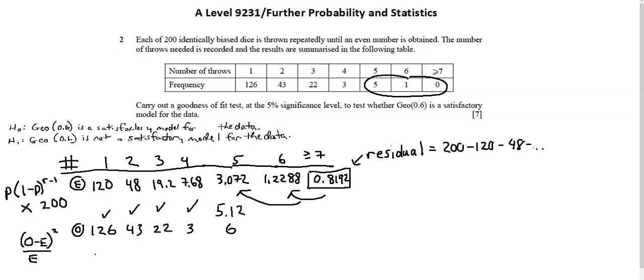And so for each of my categories, observed minus expected is 126 minus 120. That value squared over expected, which is 120. So I end up with 36 over 120. And when I do that in the calculator, I get 3 over 10.